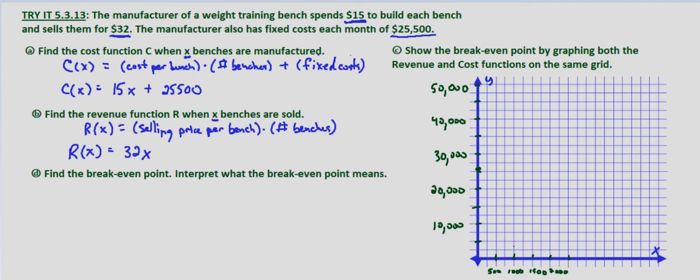So if I go to $40,500, here's $40,000, go over to $1,000, up to $40,500, and I'm right about here. Then let's try at $2,000, so $15 times $2,000 plus $25,500. We're off the graph at that point, so I'm going to bring it back to $1,500 benches. So $15 times $1,500 plus the fixed cost of $25,500.